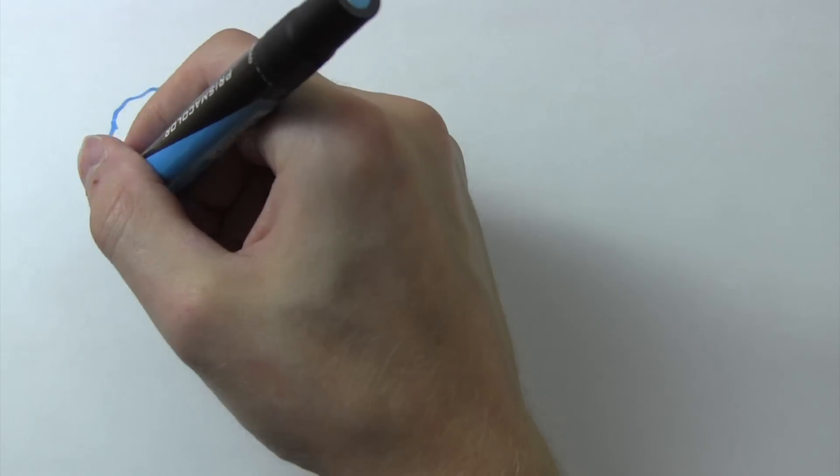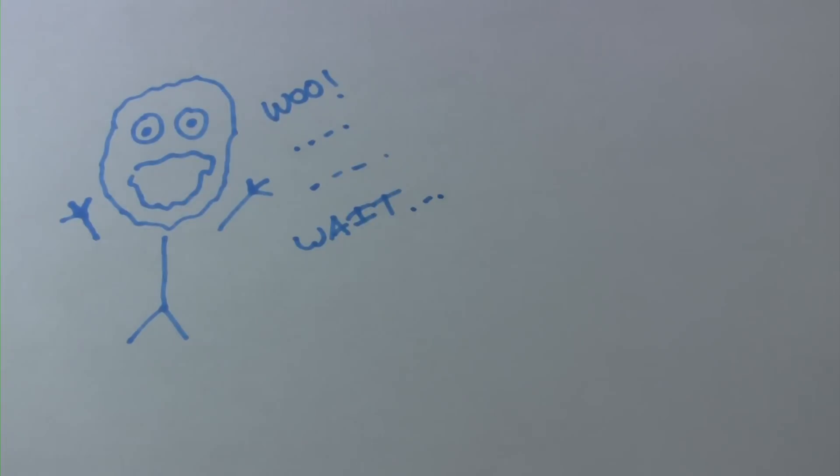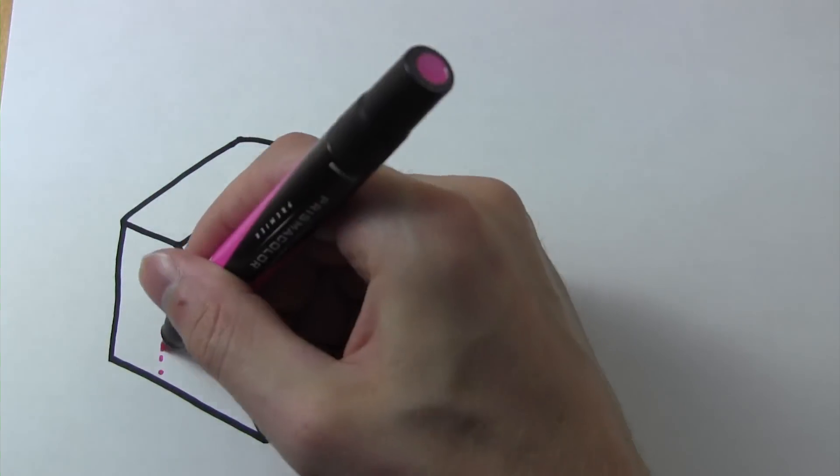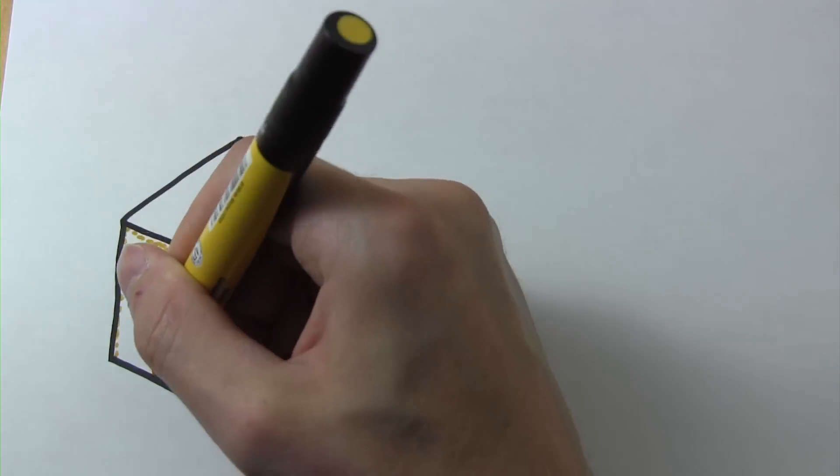But whoa, wait. What if we want to do a wedge-style enclosure with an angled face? A wedge enclosure is a combination of a rectangular section and a triangular section.